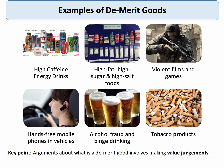Arguments about what is a demerit good involve normative economics — we are making a value judgment. Your perception of what is a demerit good will be influenced by your social norms, religious beliefs, and cultural background. Current examples in the news include the long-term economic consequences of high caffeine drinks, particularly among students revising for exams.